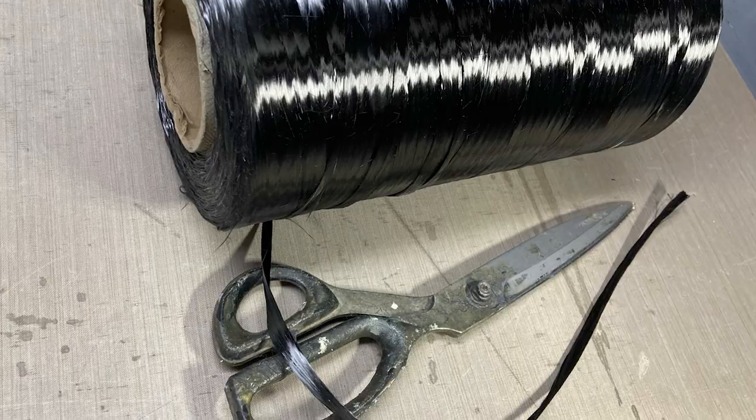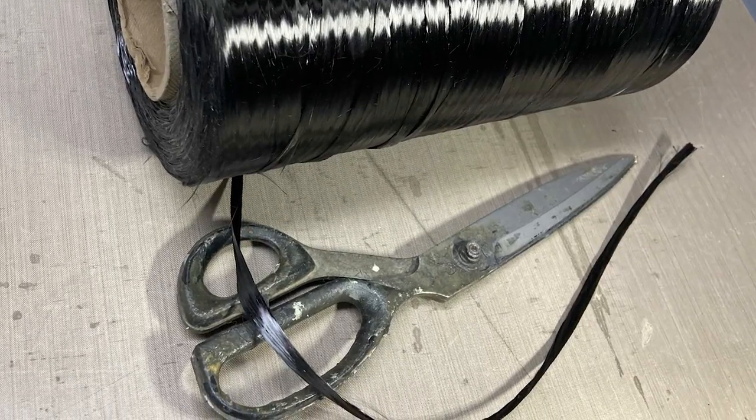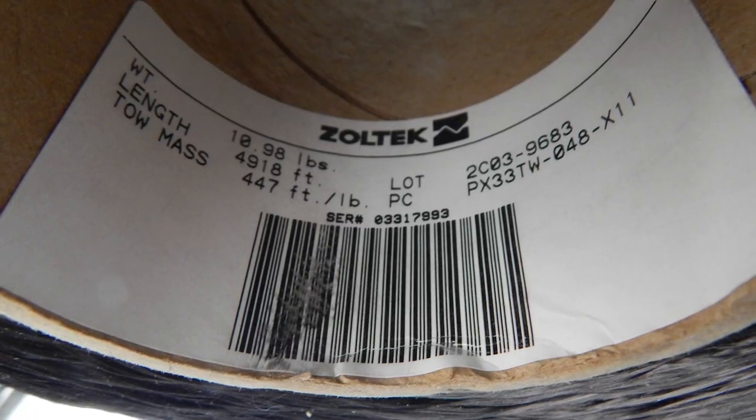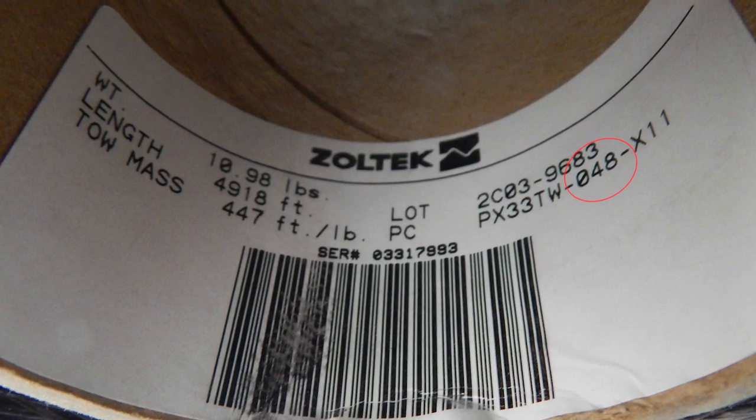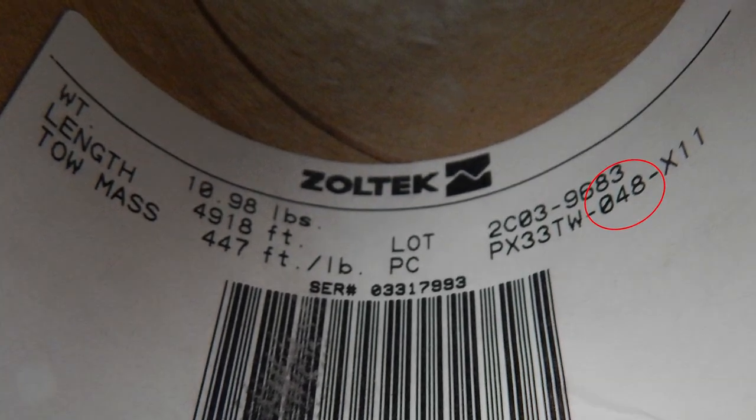Here's a look at the glass. This is two ounce, and this is the carbon tow. It is a 48k tow, which means there are 48,000 filaments of fiber in that bundle.